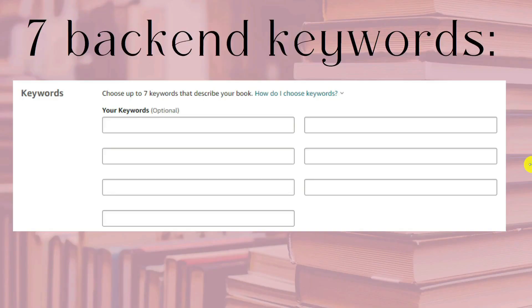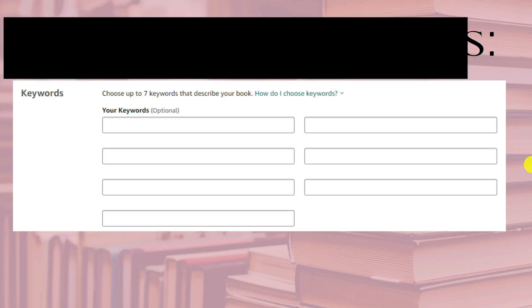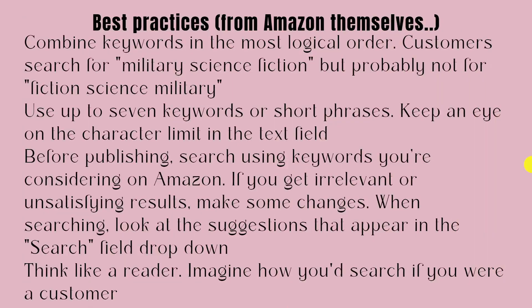When choosing the seven back-end keywords, these are what the boxes look like, and there are lots of different theories on the best way to fill them out. Should you keyword stuff? Should you just use phrases? Does it matter on the order? There are lots of different theories out there. But if you actually look at what Amazon say, this is copy and pasted from Amazon's website themselves — their best practices.